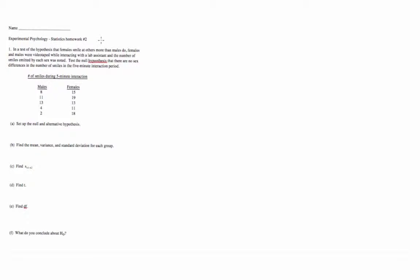Okay, so let's do the second homework, which is actually an independent groups t-test, which means that it is a between subjects, between groups design. And so what we're looking at is the number of smiles for men and women in a five-minute interaction. We're going from start to finish, soup to nuts here, on how to do this problem.